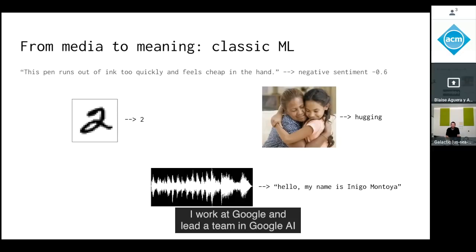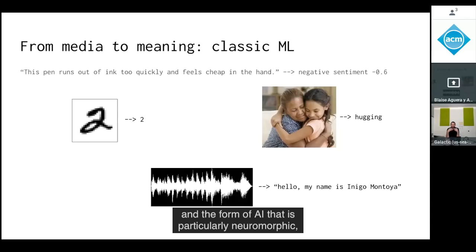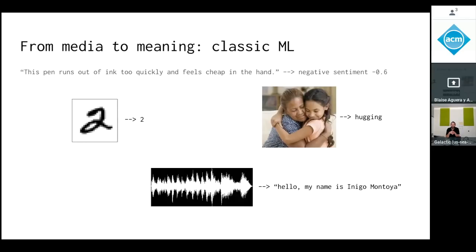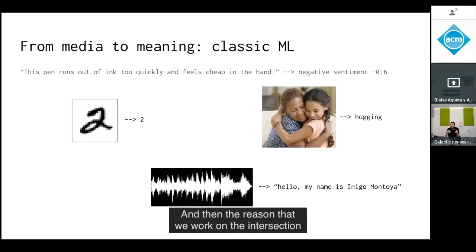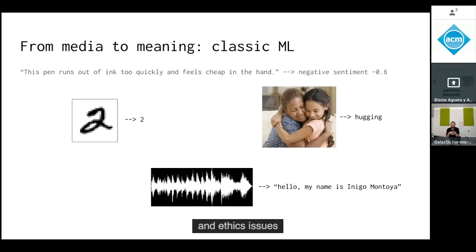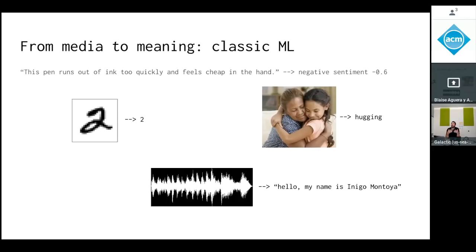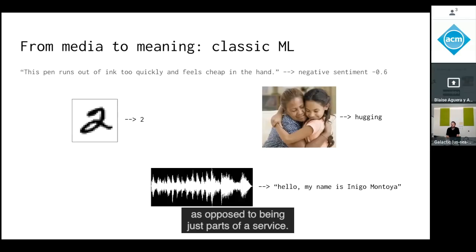I work at Google and lead a team in Google AI that works on intersections of neural nets and neuromorphic devices. We work on this intersection because we feel that a lot of important privacy and ethics issues in AI actually depend on those technologies being extensions of the human, as opposed to being just parts of a service.